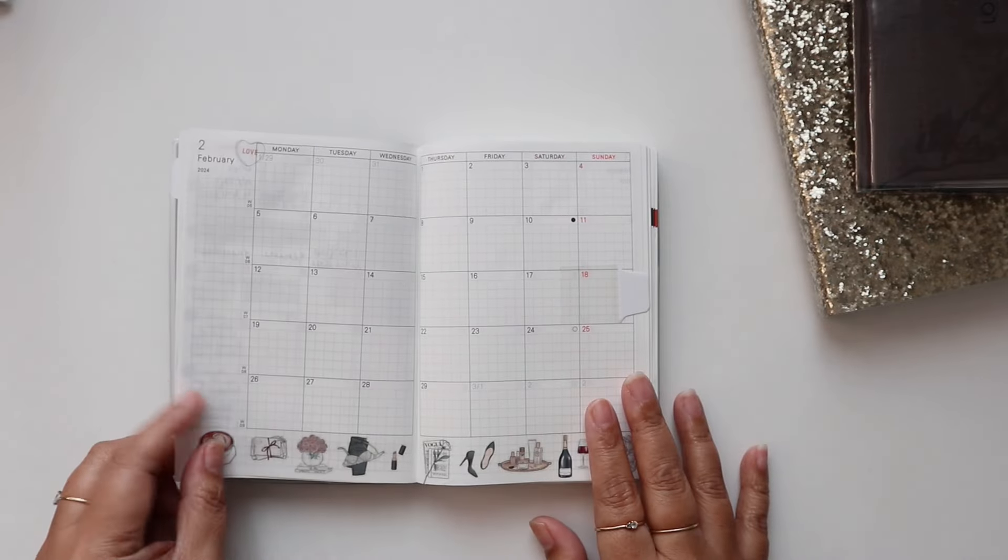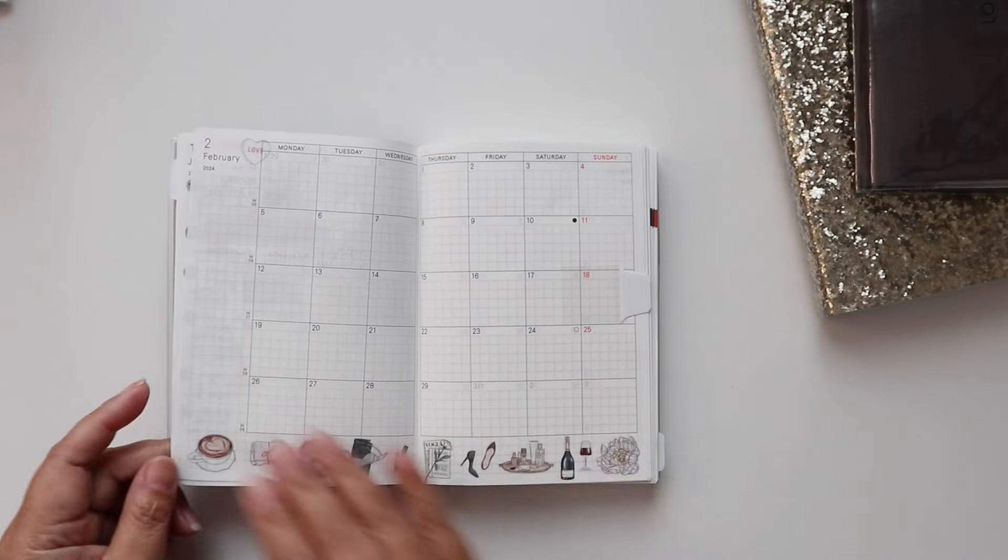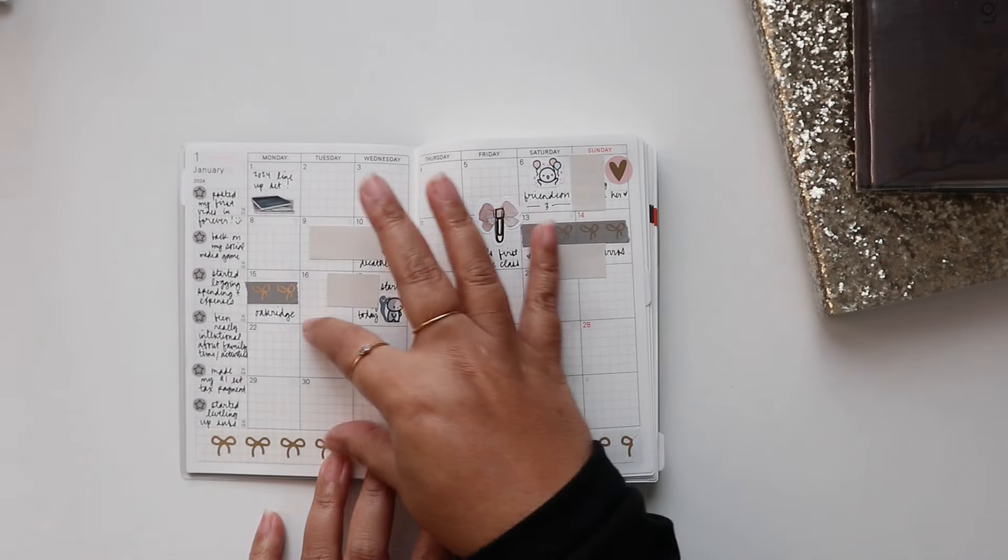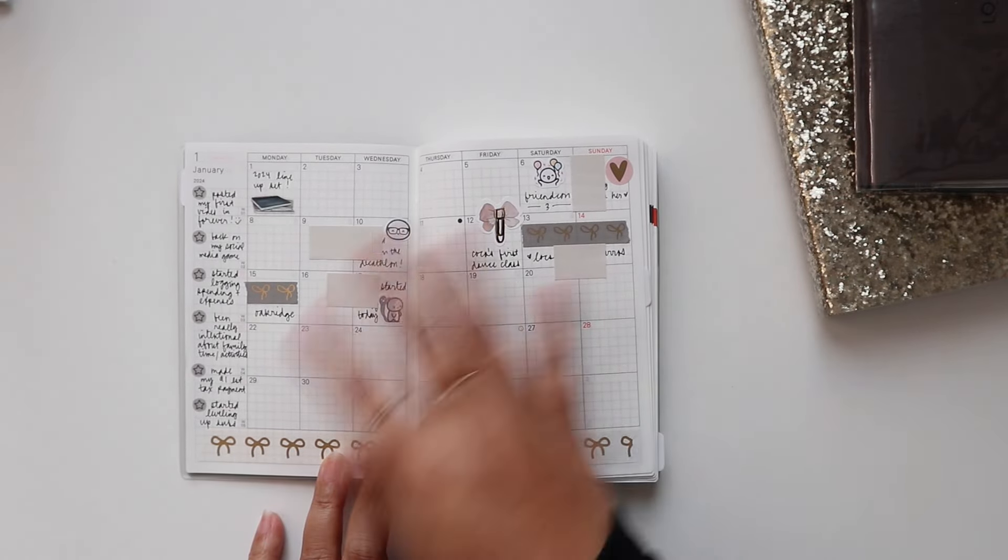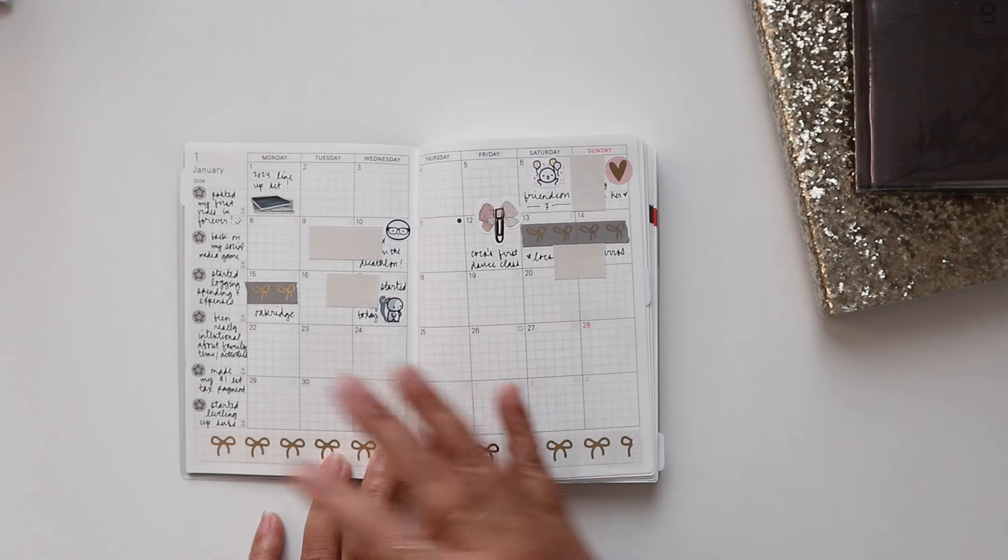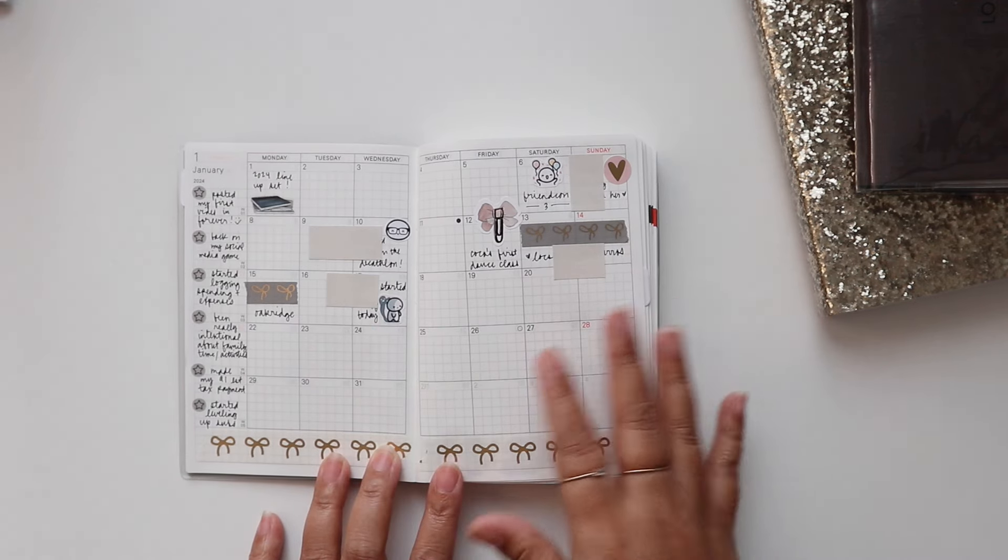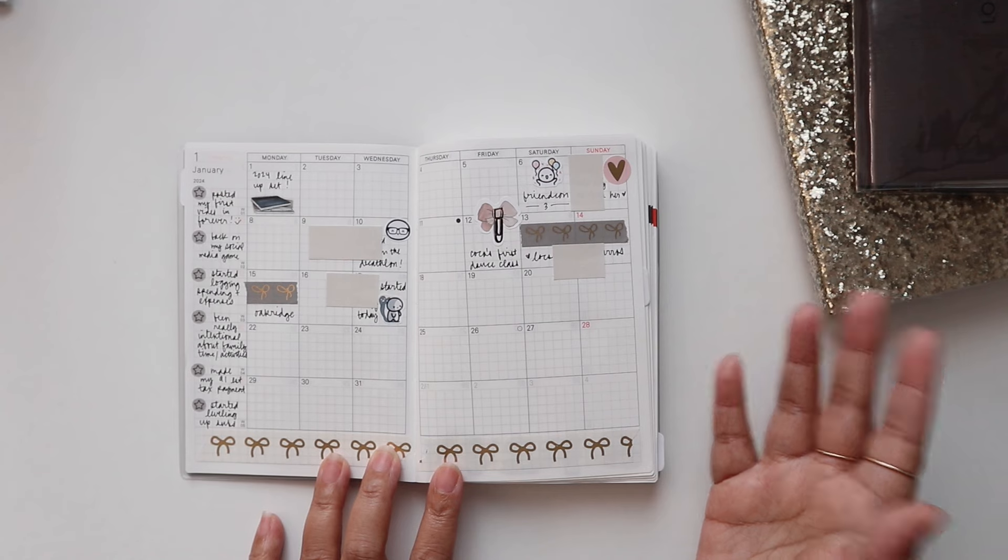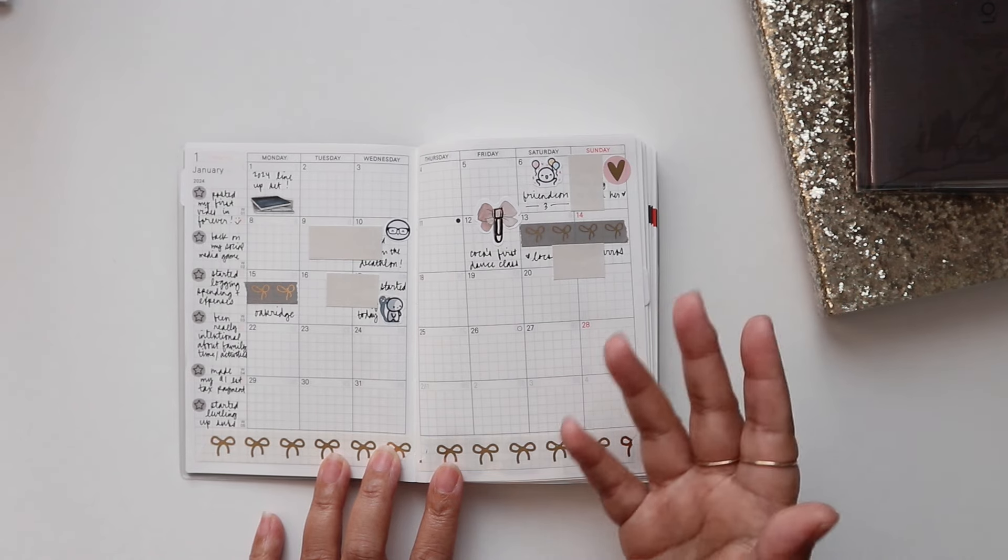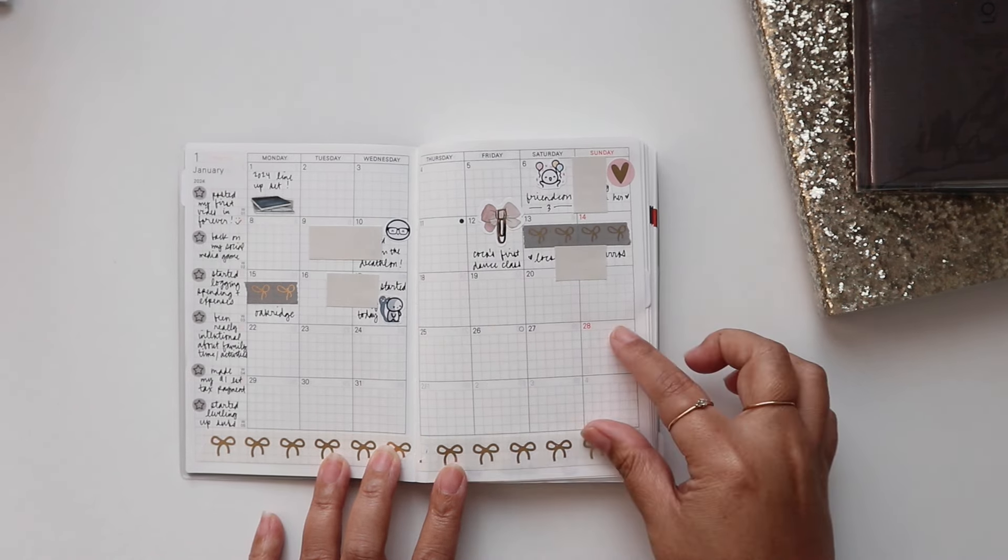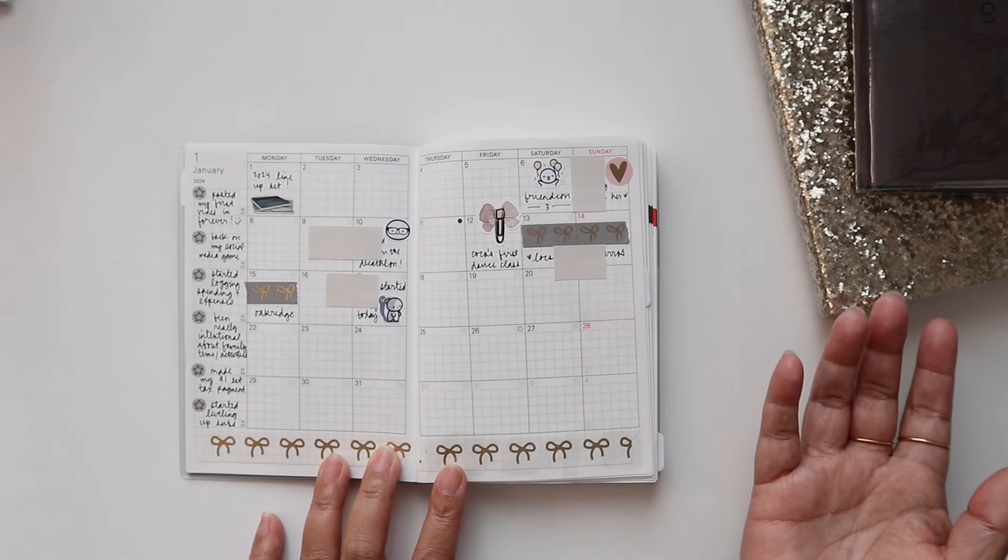And then here's the monthly. So we're in February now. Here's January. This whole spread is for documenting highlights for the month. So special things that happen, special things I want to note. Nothing much happened during these weeks. That's why it's blank.